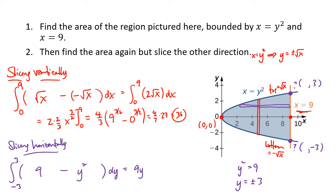We take the antiderivative of 9 to get 9y, and the antiderivative of y squared is one-third y cubed. Plugging in positive 3 and negative 3 and subtracting also gives us 36. So it's not too hard either way, and this shows the two different methods for integrating this function.